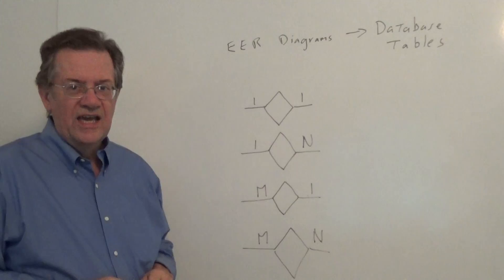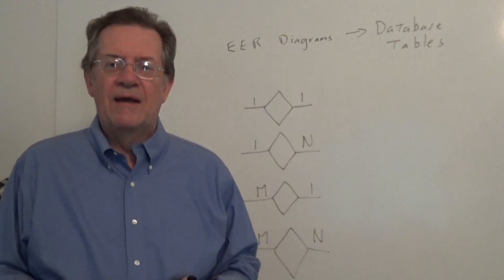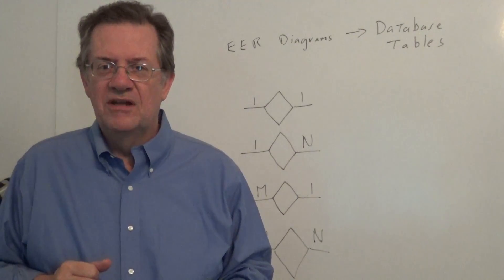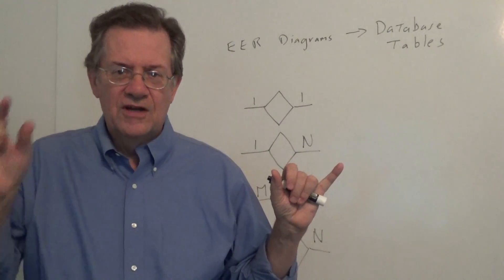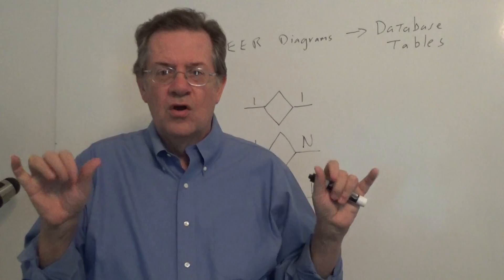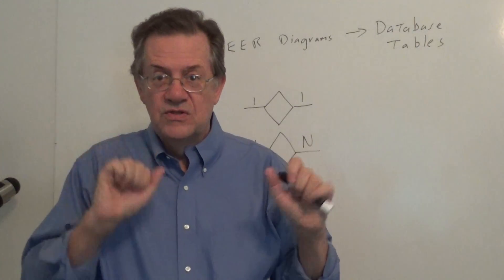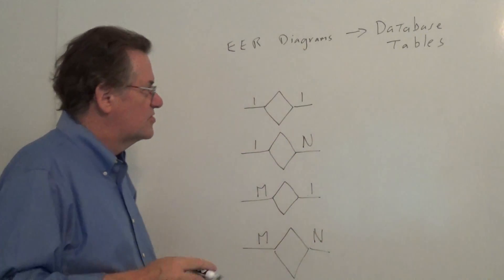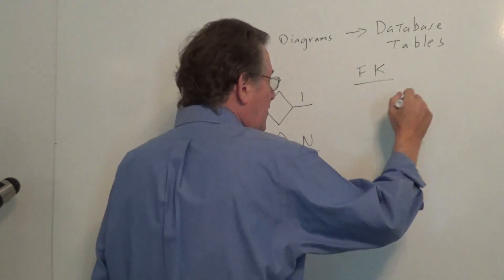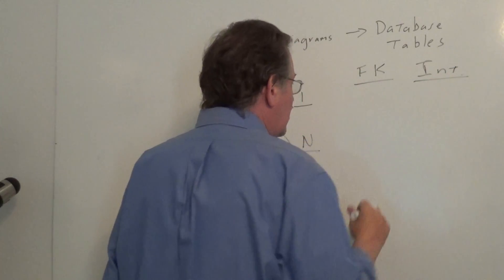Let's deal with each case, and before we do that, I'll just mention the following. When we map to a database table, one of two things can happen. Either we use, in two tables, a foreign key to go from one to the other, or we create this intermediate table, which bridges the two tables. So, we'll put the word FK for foreign key here, or we have intermediate table there.